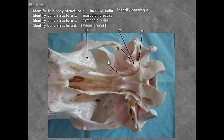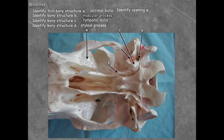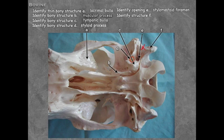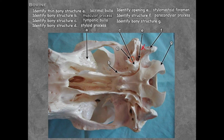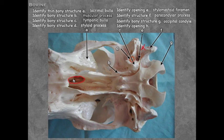In the bovine there is no mastoid process because the petrous temporal bone is not exposed externally. The foramen at E is the stylo-mastoid foramen. Structure F is the pericondylar process adjacent to the condyles. G is the occipital condyle. More rostrally, the openings going from the nasal cavity into the nasopharynx are, by definition, the choanae.